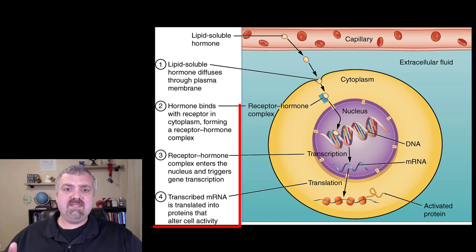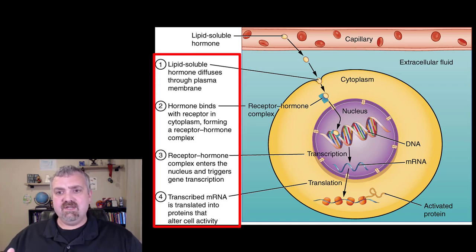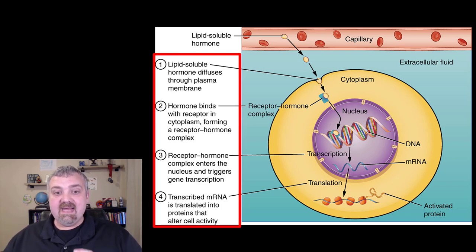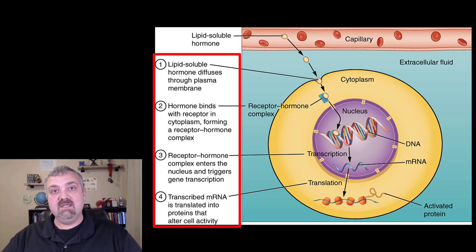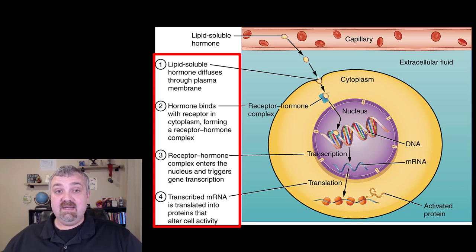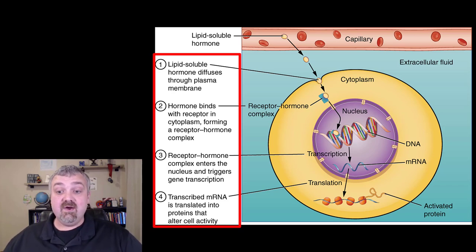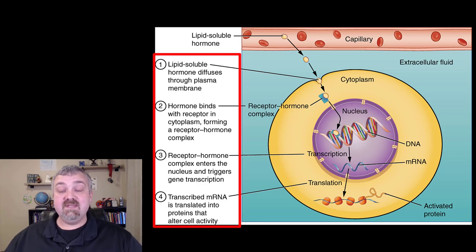So the lipid soluble hormones are going to diffuse right through the plasma membrane. They don't need to be asked in, they don't need a receptor. The hormones are going to bind with the receptor and form a receptor-hormone complex which is going to go in and impact the DNA directly. It's going to trigger transcription, which is the conversion of DNA to RNA, and then translation of RNA into proteins. So these hormones — your steroid hormones and thyroid hormone — they can walk right into the cell.